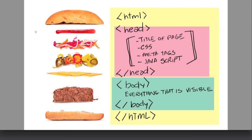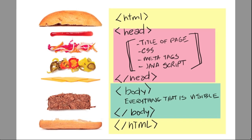The idea of HTML is kind of like a sandwich. HTML tags use these little brackets and have to begin and end. So HTML begins here — I call it the buns — and ends at the bottom. Within the HTML we have two sections: the head section, which contains stuff you don't see but controls the page — like the title, CSS, meta tags, and JavaScript — and the body, which is everything visible on screen, like the meat of the sandwich.